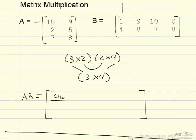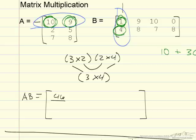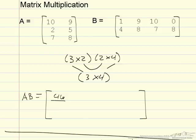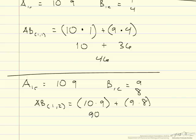The reason we calculate this way is that for each element in AB, we need the entire row of A and the entire column of B. We multiply the first element of the row by the first element of the column, and add the second element of each to get 46. For the next spot, element (1,2), we need row 1 of A and column 2 of B. Row 1 is still [10, 9] and column 2 is [9, 8]. So for AB (1,2): 10 times 9 plus 9 times 8, which is 90 plus 72, equaling 162. That number is then placed in position (1,2) of AB. You have to do this for every single element.